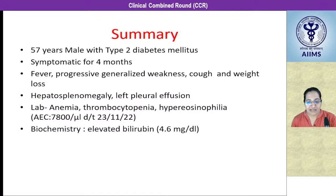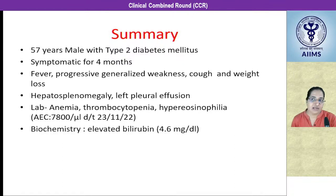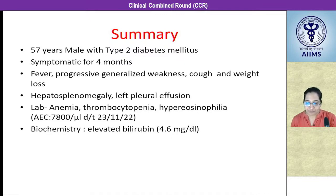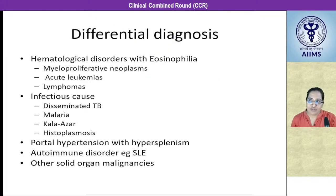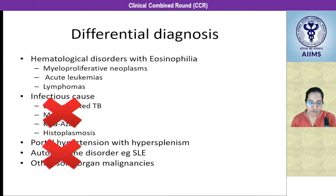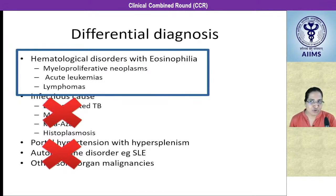To summarize, we had a 57-year-old male with past history of well-controlled type 2 diabetes mellitus, symptomatic for 4 months with fever, progressive weakness, cough, and weight loss. Physical examination was significant for hepatosplenomegaly and left-sided pleural effusion. Lab showed anemia, thrombocytopenia, hypereosinophilia increased to 7,800, and elevated bilirubin. Most differential diagnoses like infectious, autoimmune causes, solid organ malignancies, and portal hypertension were already ruled out. What remained was a hematological disorder with eosinophilia causing all these symptoms.